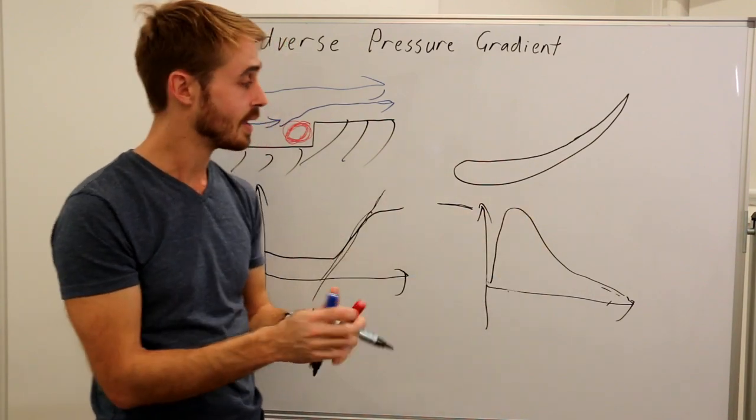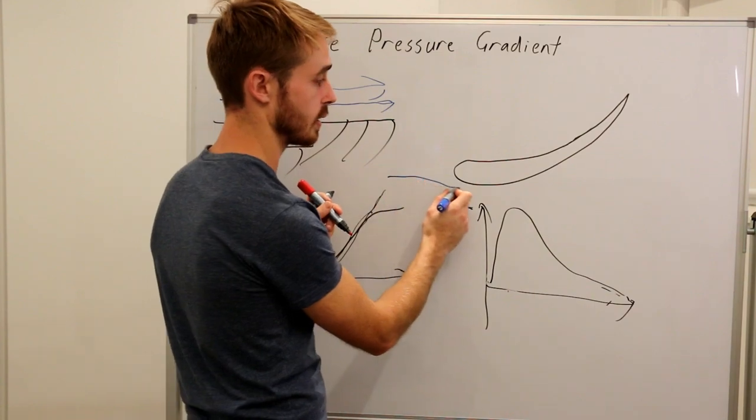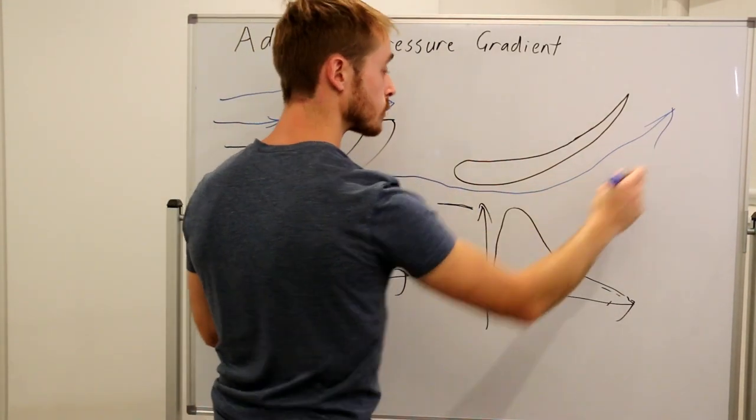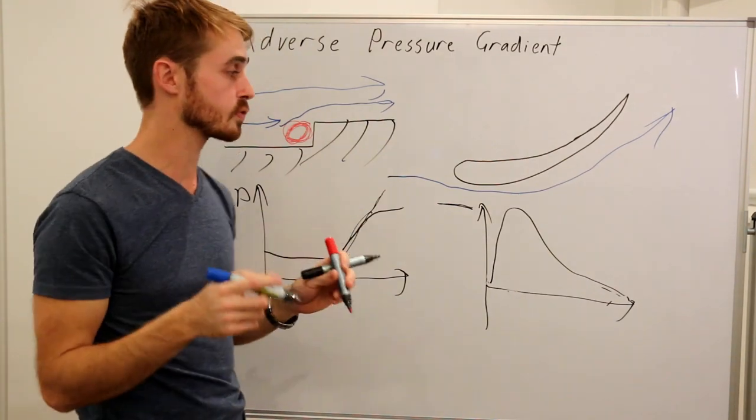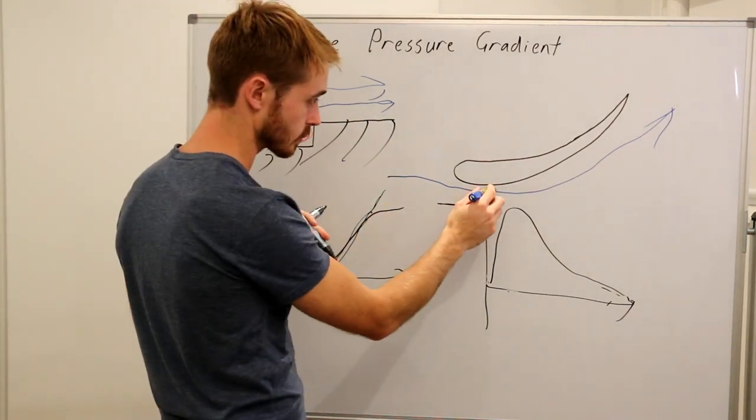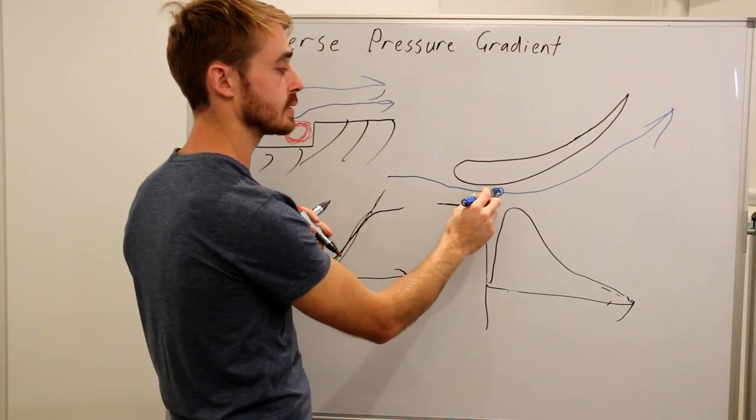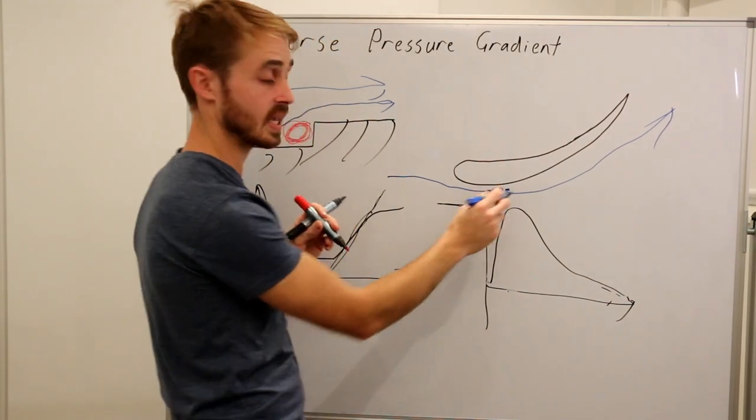To show you why this happens, if you imagine your flow coming in here and it gets deflected on the wing and then heads up, we all know that as flow goes faster it reduces in pressure generally speaking. When we hit this point, our flow accelerates and hits our maximum speed, so we're going very fast here.